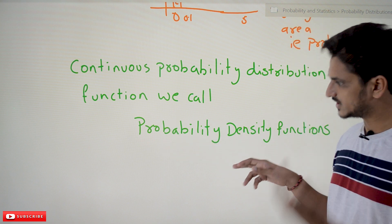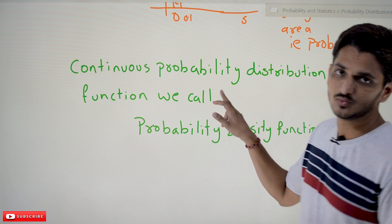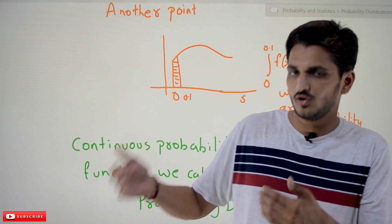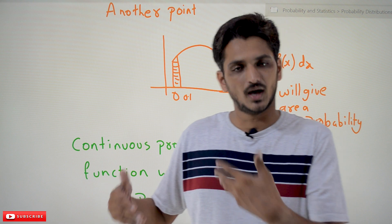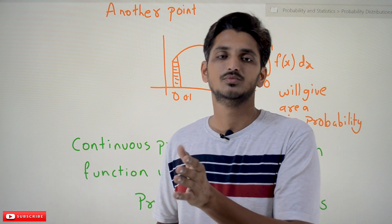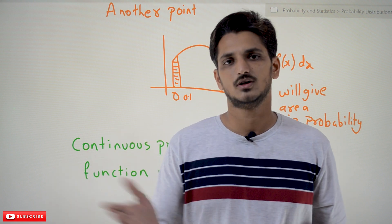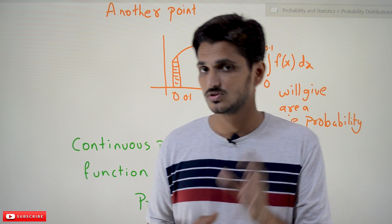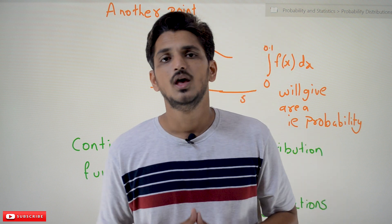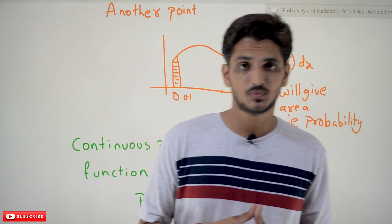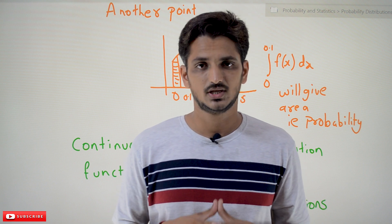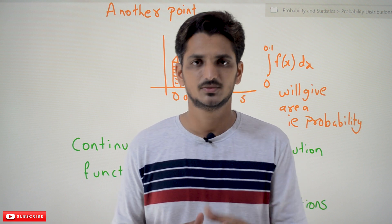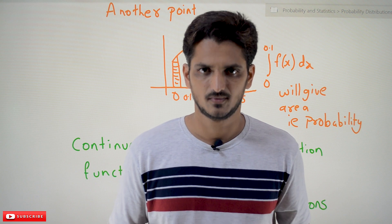In the next class we will do some practice examples on probability density functions, then we will go with some real-time examples of normal distribution and Gaussian distribution. Hope you understand the concept of continuous random variables. If you have any questions please post them in the comment section below. Thanks for watching — if you haven't subscribed to our channel, please subscribe and press the bell icon for the latest updates. Thank you.